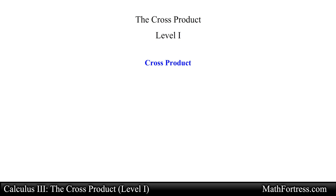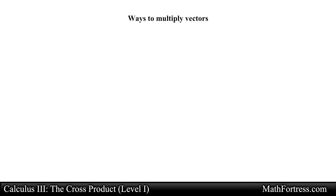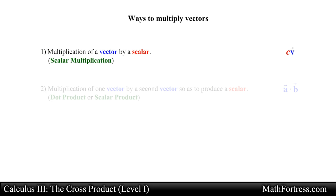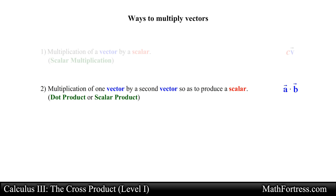In this video we will define a new vector operation called the cross product, also known as the vector product and sometimes referred to as the area product. In the previous videos we defined two ways in which you can multiply vectors together: the first was scalar multiplication, which produces a vector, and the second was the dot product, which produces a scalar.